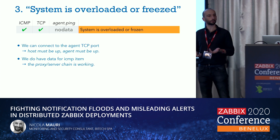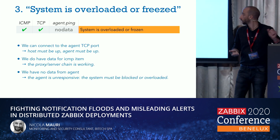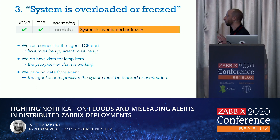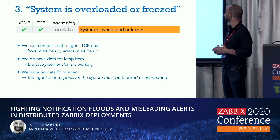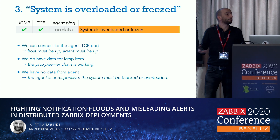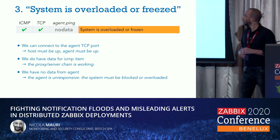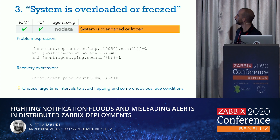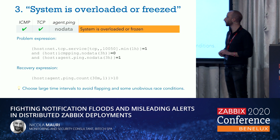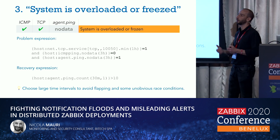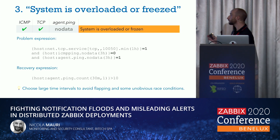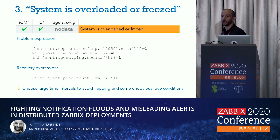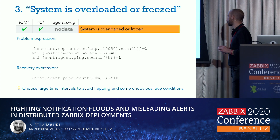The third trigger is a little bit tricky. We can connect to the agent TCP port, so host and agent must be up. We do have data for ICMP, so the proxy and server are properly working. But at the same time, we have no data from the agent — the agent is unresponsive and the operating system has some problems: overloaded, blocked, or perhaps a kernel panic. I suggest defining a recovery expression — we are very happy if we receive 10 pings from the agent within 30 minutes to recover this trigger. Also remember to choose large time intervals to avoid flapping and race conditions.